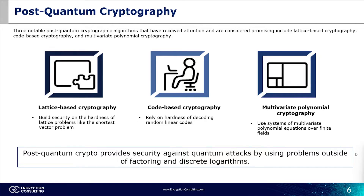Diving deeper into post-quantum cryptography, there are three notable PQC algorithms worth mentioning. First, we have lattice-based cryptography — a cryptographic system that builds its security on the hardness of lattice problems, such as the shortest vector problem. Cryptographic algorithms utilize the properties of lattices, which are mathematical structures representing periodic arrangements of points in space. The security relies on the computational complexity of solving lattice problems, believed to be difficult even for quantum computers, making lattice-based cryptography a promising avenue for post-quantum cryptographic solutions.